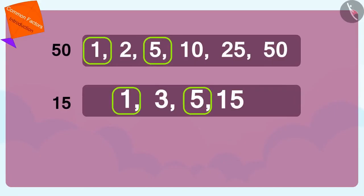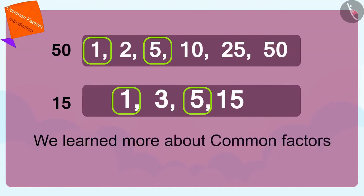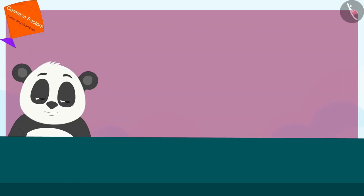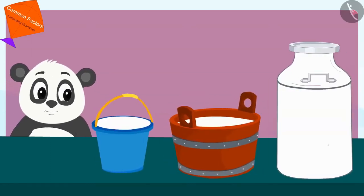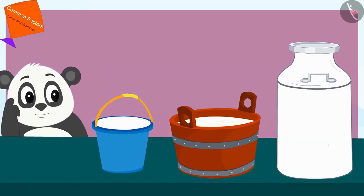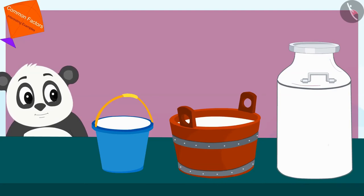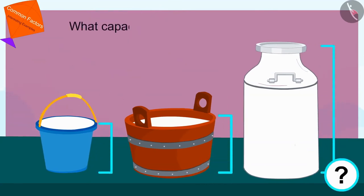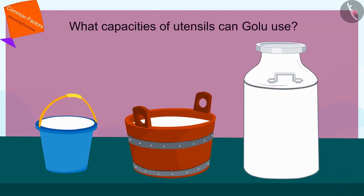Hello kids. In the previous video, we learned more about common factors. In this video, we will learn more about common factors by some interesting examples. Golu has 12, 18 and 24 litres of milk filled in different pots. But Golu doesn't remember which utensil has how many litres of milk. Golu is thinking that he will measure the milk of all those utensils using a single vessel. Children, can you tell us what capacities of utensils can Golu use? If you want, you can pause the video and find the answer.